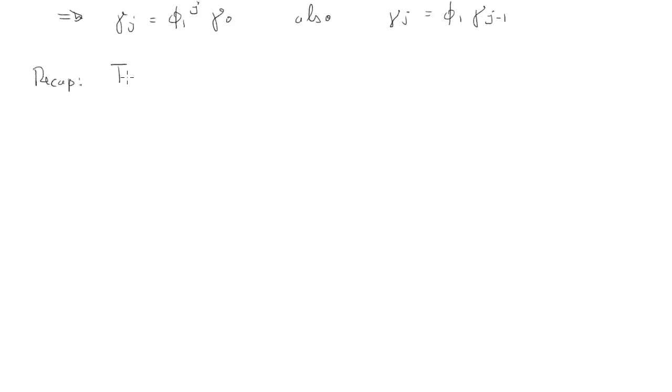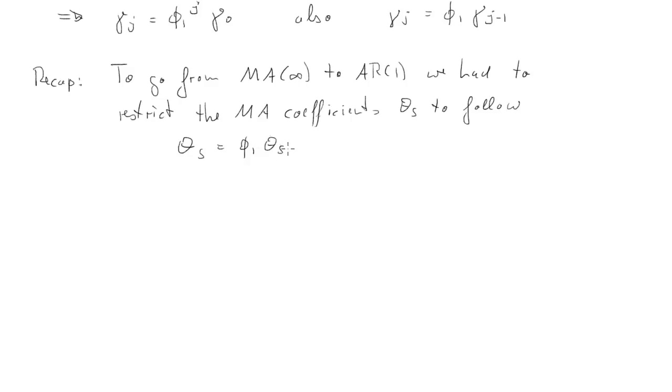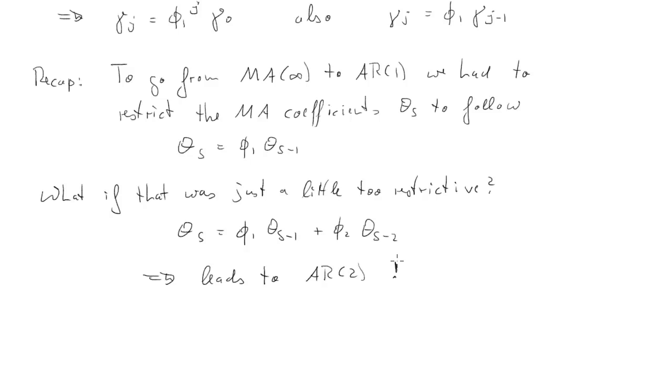Let's recap what have we seen so far. We could get from an MA infinity to an AR1 process by restricting the MA coefficients theta s as follows: theta s is equal to phi 1 times theta s minus 1. This is how we got to an AR process. But that's actually a quite restrictive way of linking them together. What if that is a little too restrictive? Well, let's loosen it one step. We could relate theta s with theta s minus 1 and theta s minus 2. If we then go through all the algebra again, which we've done before for the AR1 case, this will lead to an AR2 case. And of course, that will generalize to ARP processes as well. So we have linked MA infinity processes to finite AR processes.